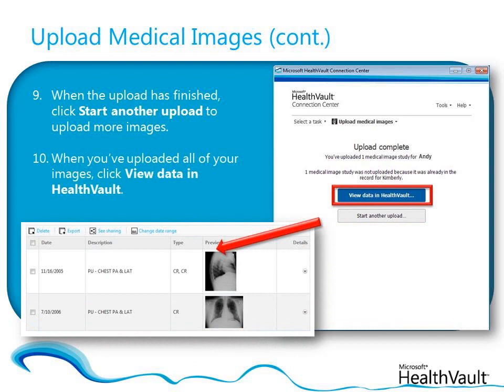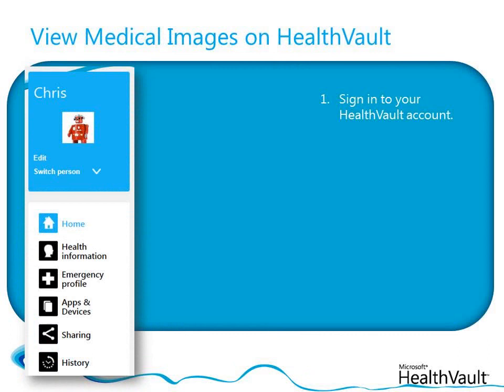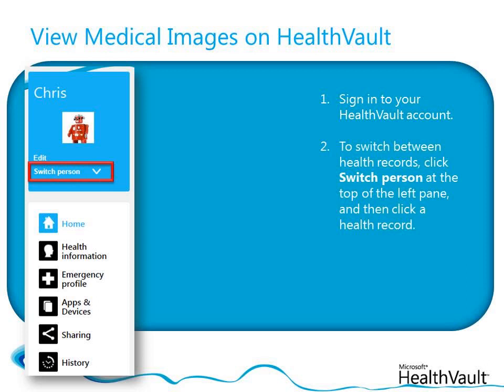You can also view your uploaded images by opening your HealthVault account directly. Sign in to your HealthVault account at www.healthvault.com. At the top of the left pane, you can see whose health record you're currently viewing. To switch to a different health record in your account, click Switch Person at the top of the left pane, and then click the health record you uploaded the medical images to.